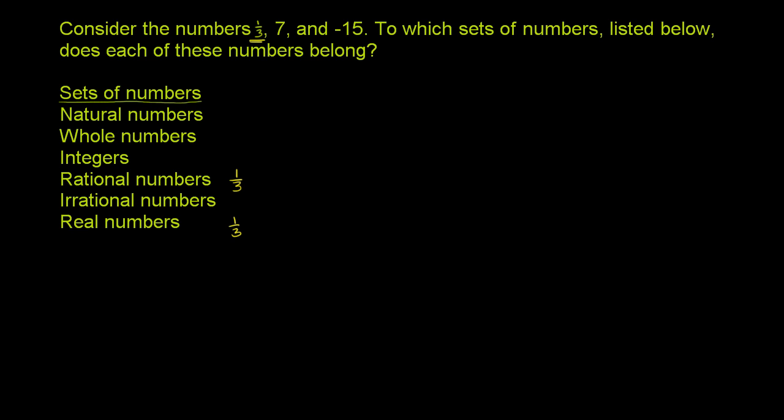So let's do 7 here. So 7 is a natural number. When you count things, you can count up to 7. It's definitely a whole number. In fact, anything that's a natural number is also going to be a whole number. And anything that's a natural number or a whole number is also going to be an integer.